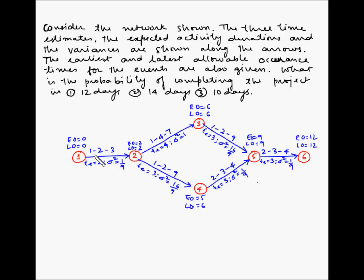For each of the arrows or the activities, we have been given 3 time estimates. For the activity between 1 and 2, the first one will represent the optimistic time, the second one will represent the most likely time, and the third one will represent the pessimistic time. The same is the case with all the activities.